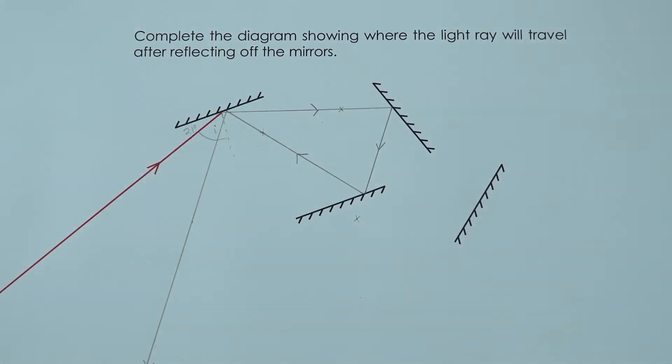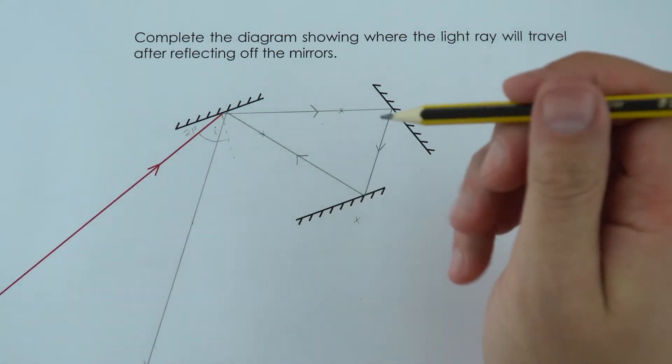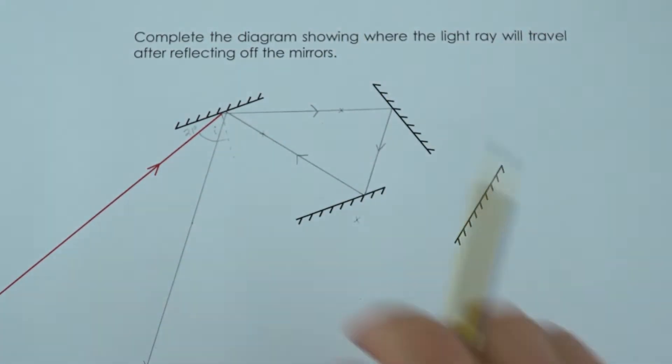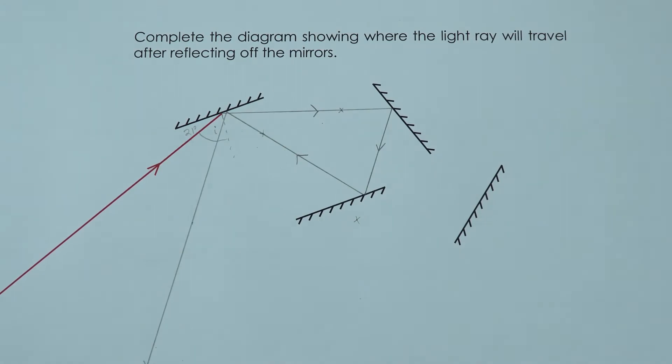So this one here again it's not really a test of your physics knowledge apart from that I is equal to R, but it's really a test of your ability to use a protractor and take your time to draw a scale drawing. So that's what happens when this ray of light is reflected off those mirrors.